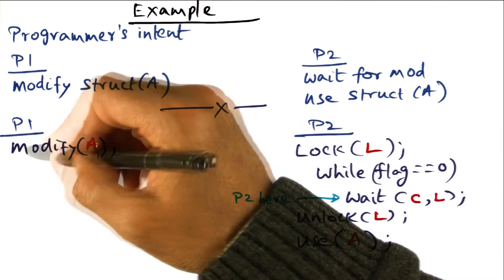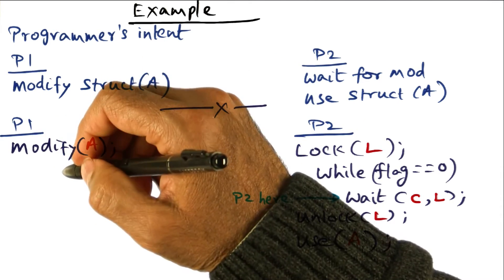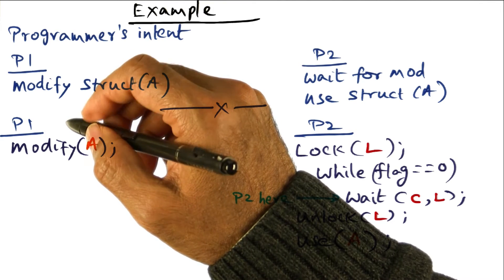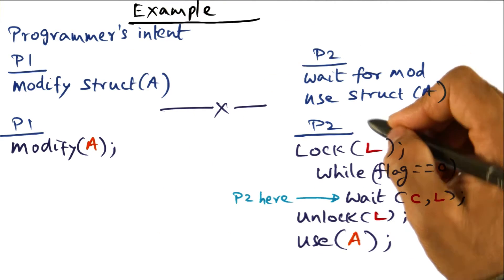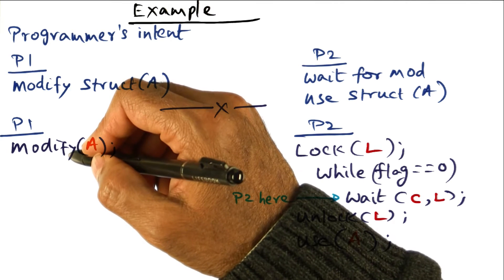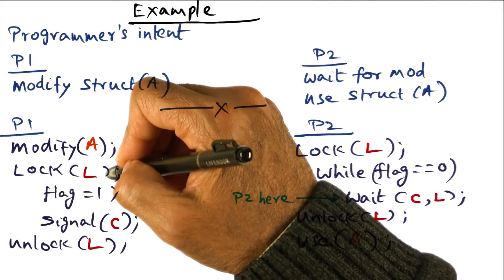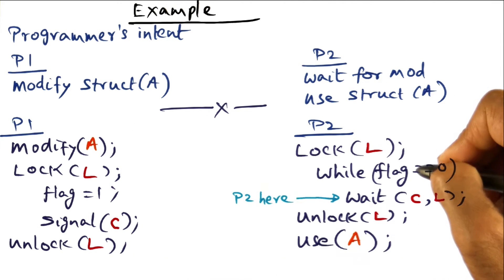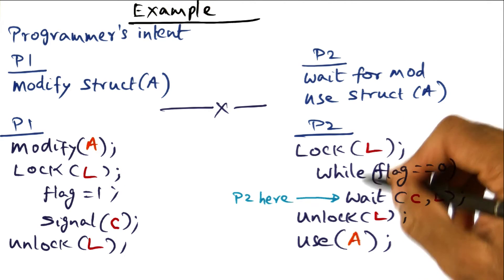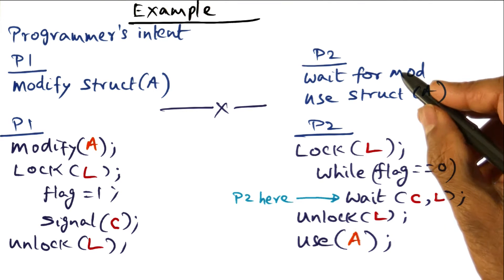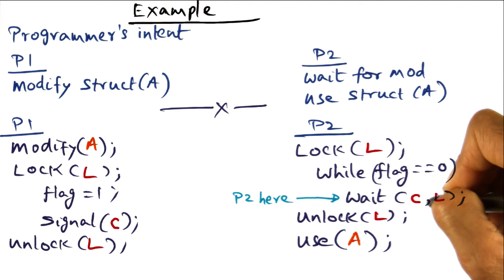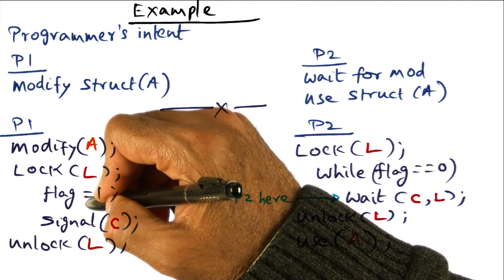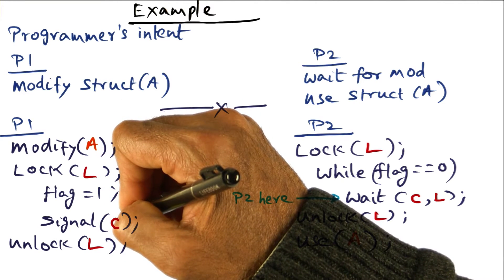P1 is executing the code for modifying the data structure A, and once it is done with all the modification, then it is going to inform P2. So in order to inform P2, what it does is it acquires this lock L and it sets the flag to one. The flag is the one that I inspected over here to know that the modification is not yet done here and I'm waiting on this condition variable. So P1 sets the flag to one and signals on the condition variable C.